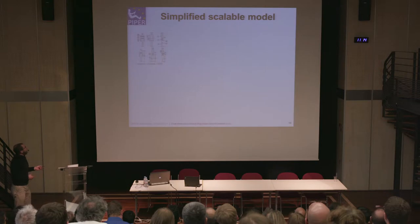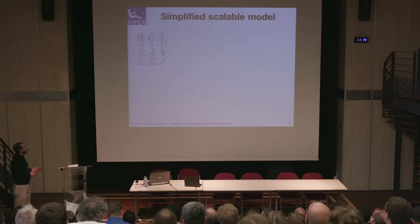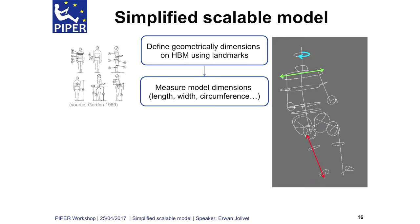First, from the definition of the anthropometric measurement defined in the dataset — for example, for ANSUR, as shown before — using some metadata defining landmarks, we can simply define on the human body model the values measurement used and defined in the dataset. Here's an example of the ANSUR anthropometry defined on the GHBMC. On this geometrical information, you can make some measurements, some lengths and circumferences.